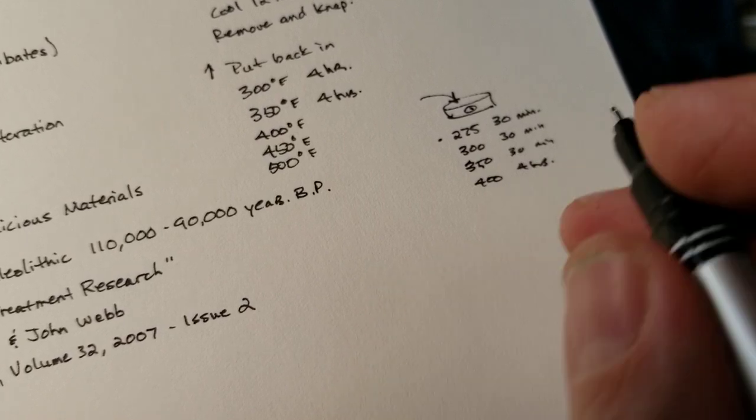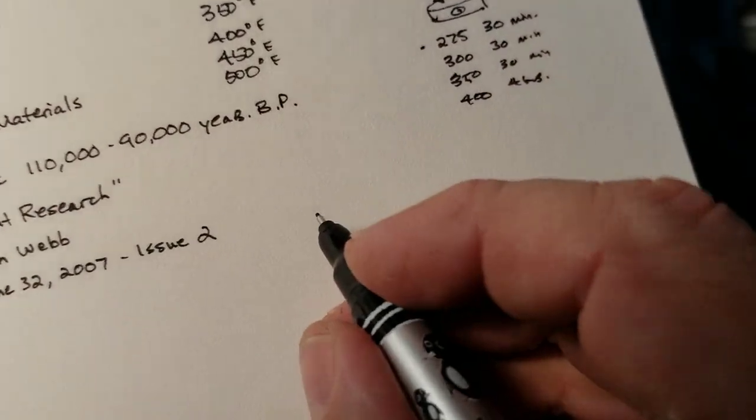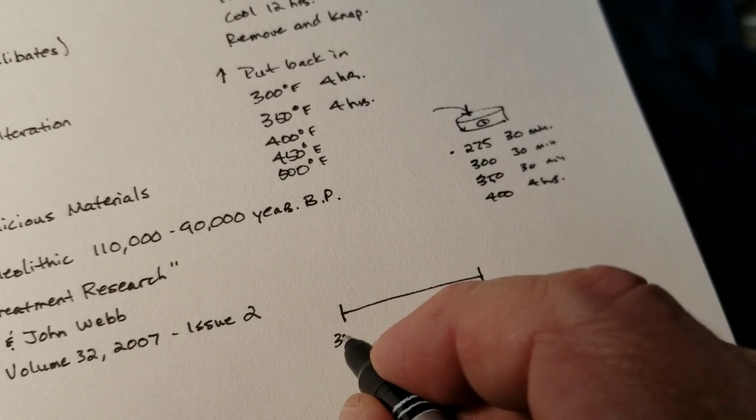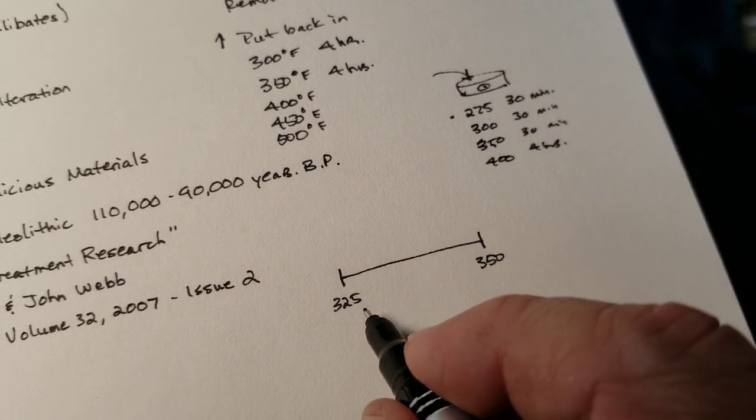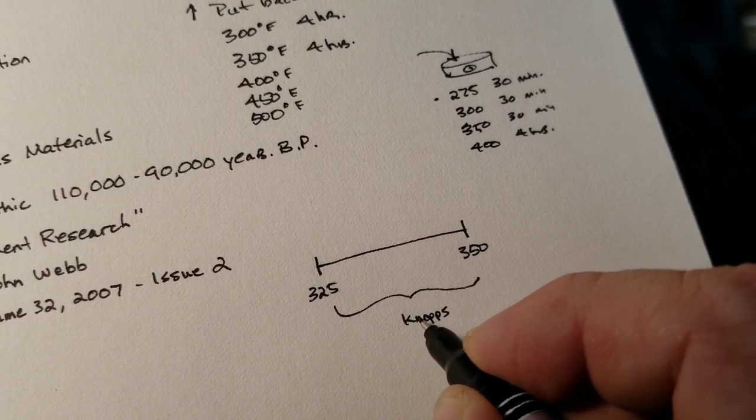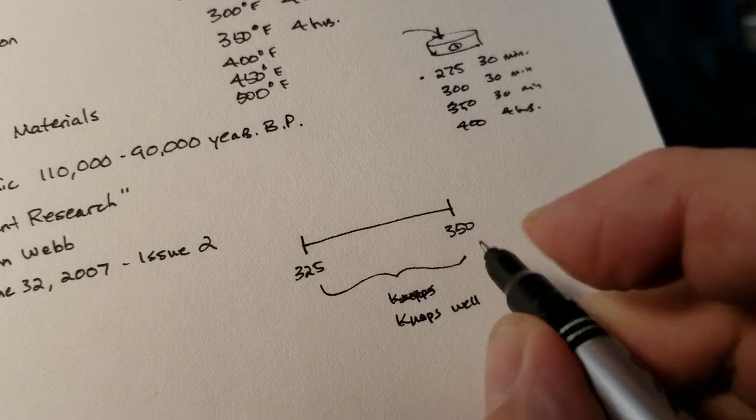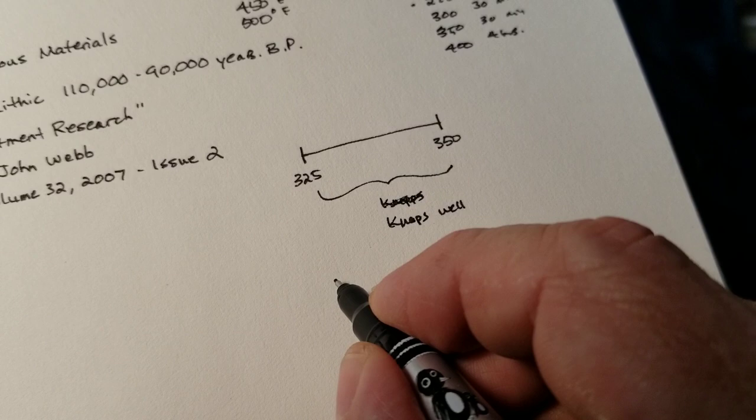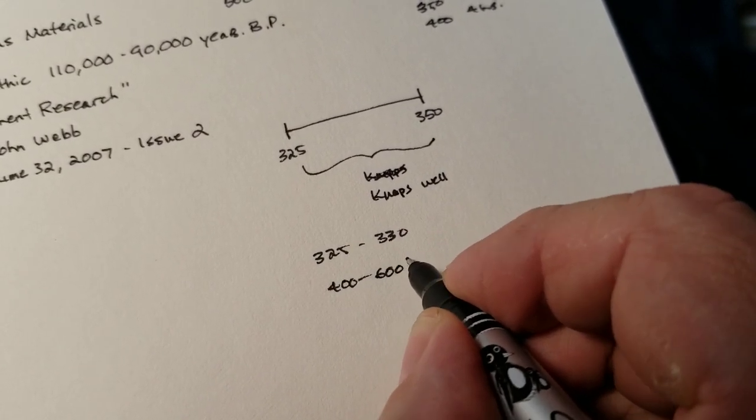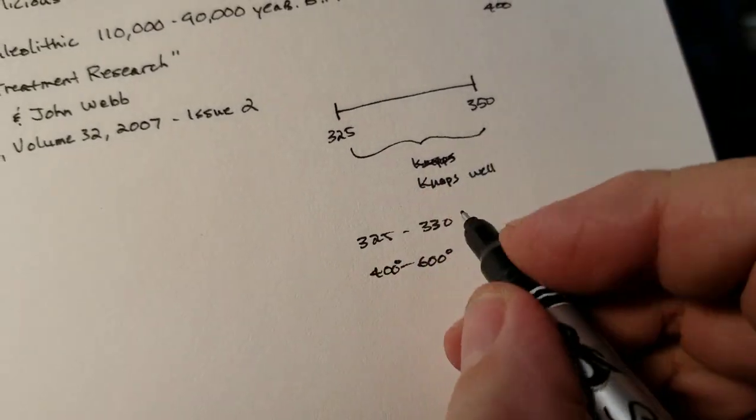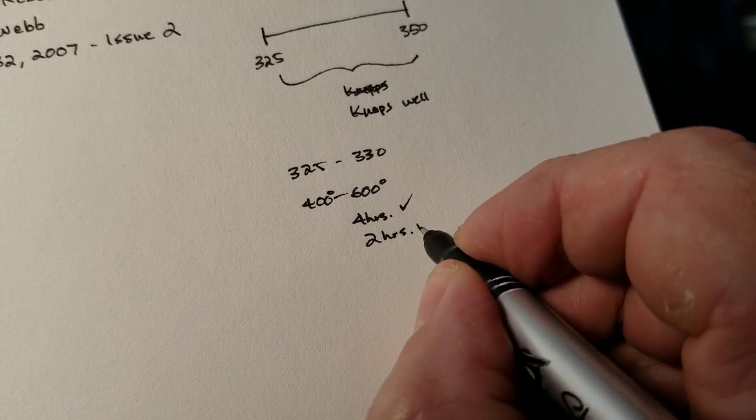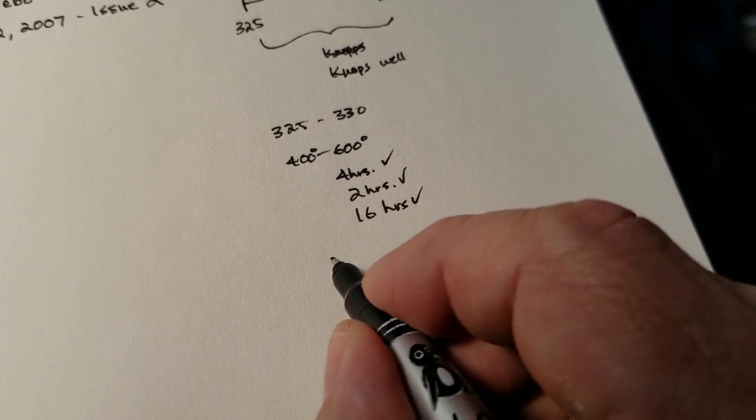Now heat treating and a lot of people miss this part. Heat treating is on a spectrum. Which means there's a range. Let's say it's 325 to 350. On a particular stone, this is the range where it naps well. Sometimes this range is only 325 to 330 or something like that. Very tight range. Sometimes it could be 400 to 600 degrees where it naps. You can heat it. Sometimes you can nap it as little as four hours and it's good. Sometimes as little as two hours is good. But sometimes it requires 16 hours. It's good, but it's still on a spectrum.